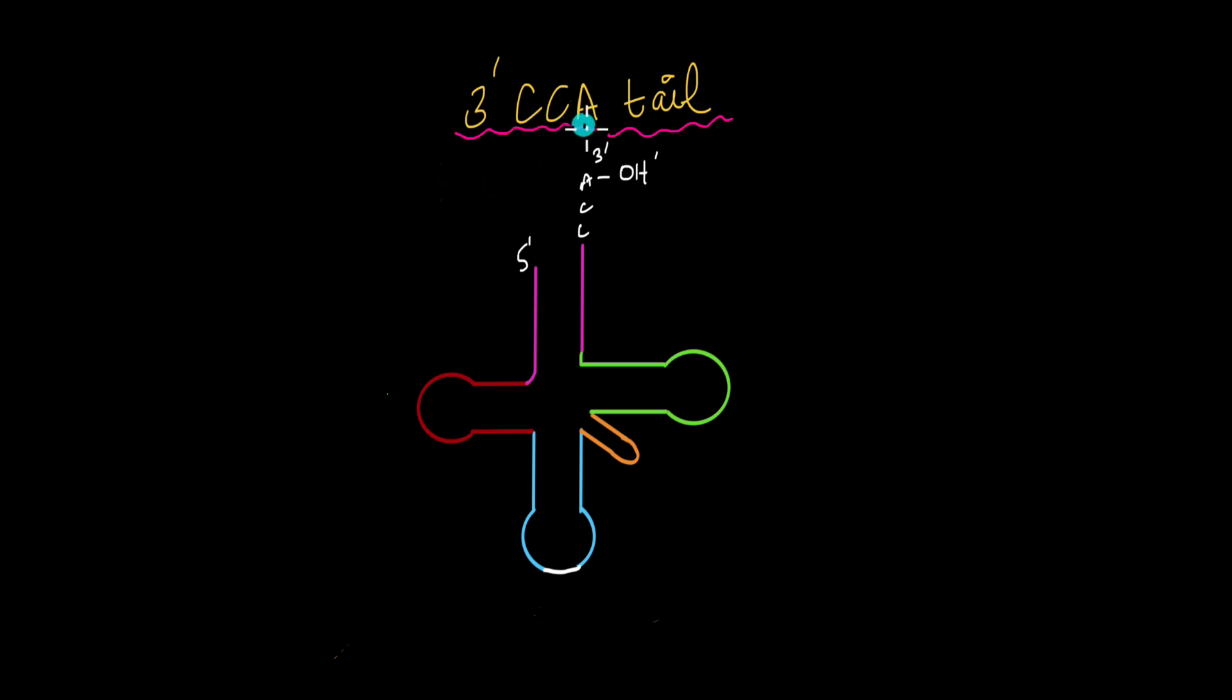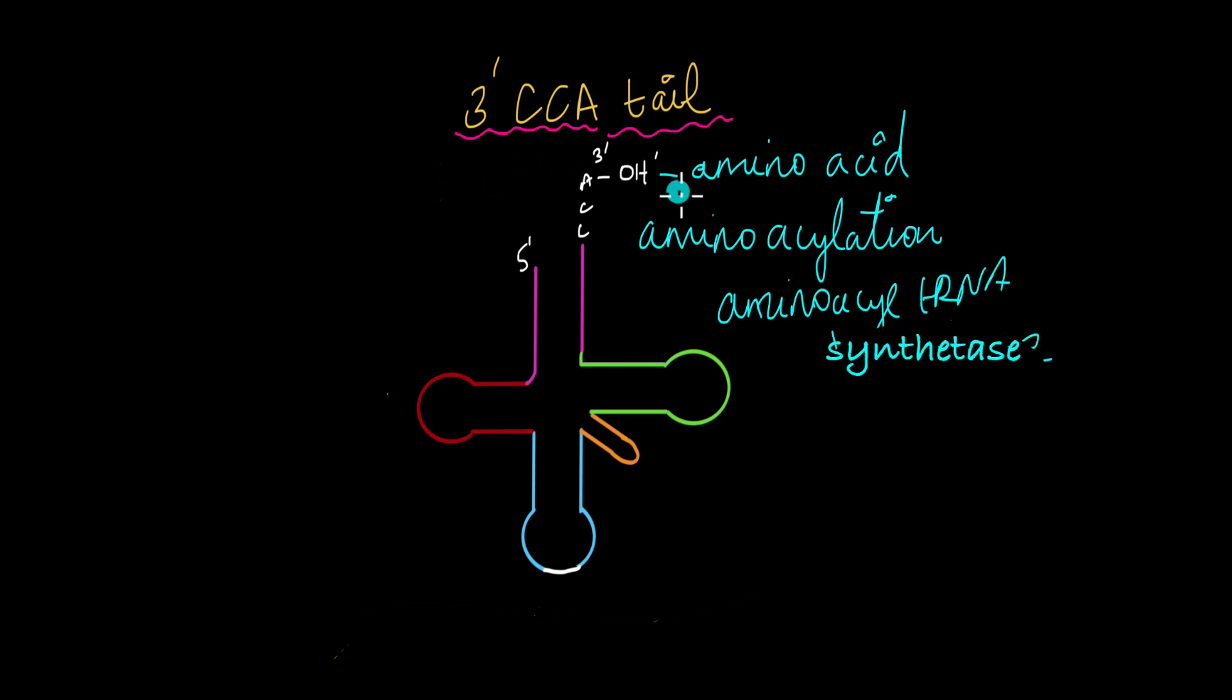So like I mentioned, the 3' CCA tail has a free hydroxyl group that can bind to the amino acid. The process is known as aminoacylation, tRNA aminoacylation. And it is catalyzed by the enzyme aminoacyl tRNA synthetase. So this enzyme adds a single amino acid to the 3' OH group and charges this tRNA. That is what this process is called, charging of tRNA. Now this tRNA is ready to deposit this amino acid onto the growing polypeptide chain based on the codon sequence of the mRNA.